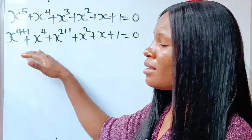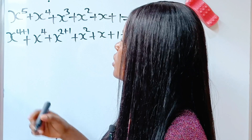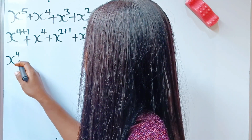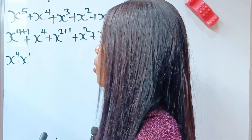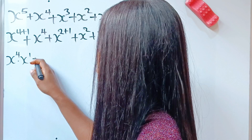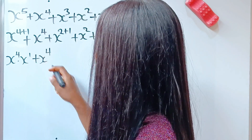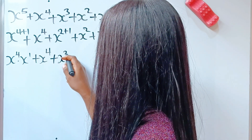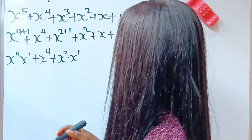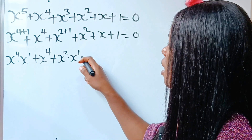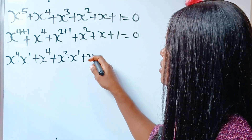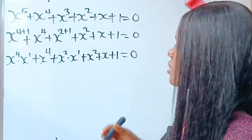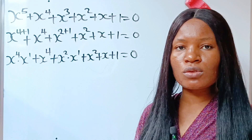So, we are going to apply the law here. If we do that, we are going to write this as x to the power of 4 multiplied by x to the power of 1, plus x to the power of 4, plus x to the power of 2 multiplied by x to the power of 1, plus x squared plus x plus 1 is equal to 0.